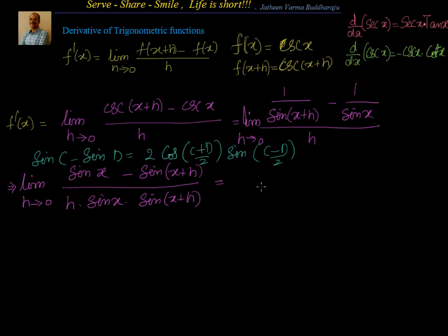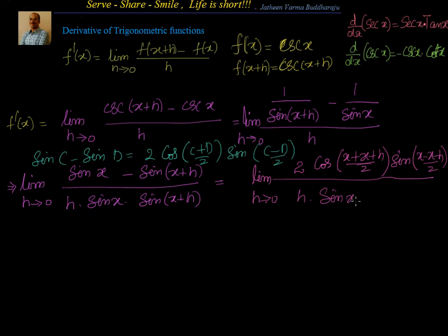So I can write it as 2 into cos c plus d by 2, that is x plus x plus h by 2, multiply that with sin of x minus x minus h by 2, because c minus d by 2, divided by I have limit of this. Let me don't forget that. I have h here, I have sin x here and I have sin of x plus h.